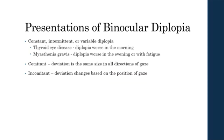Binocular diplopia can be constant, intermittent, or variable. Diplopia that is worse in the morning may point to thyroid eye disease, whereas diplopia that is worse in the evening or with fatigue may point to myasthenia gravis. Finally, binocular diplopia can be comitant, which means that deviation is the same size in all directions of gaze, or incomitant, which means that deviation changes based on the position of gaze.